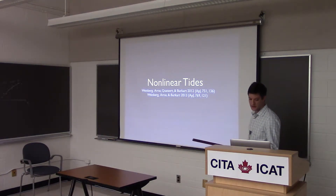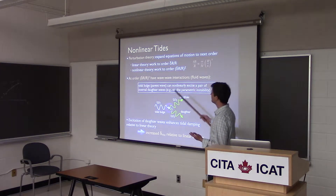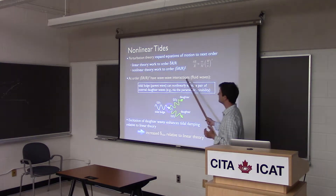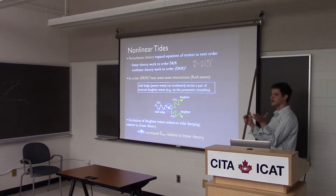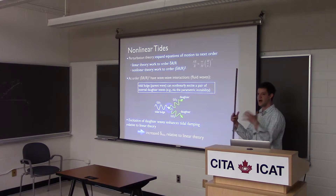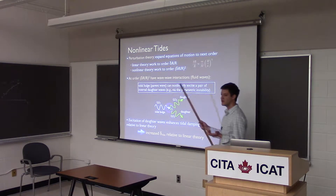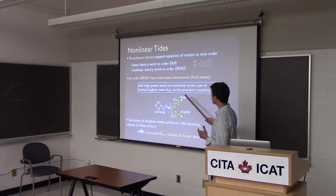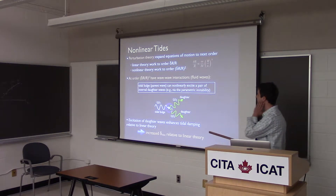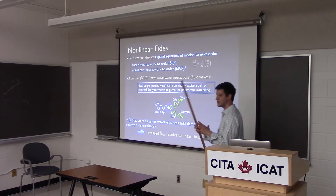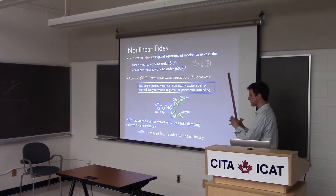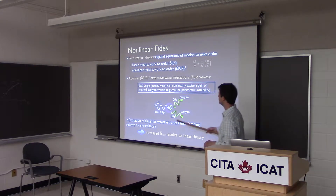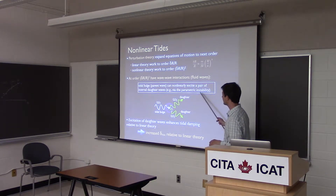This brings us to nonlinear tides. In perturbation theory expanded to second order in delta r / r, waves on the star begin to interact with each other — unlike in linear theory where they pass through each other. An example of such wave-wave interaction is a parent wave (like the tidal bulge) nonlinearly exciting pairs of daughter waves. This is sometimes discussed as a parametric instability where the parent frequency nearly equals the sum of daughter wave frequencies.